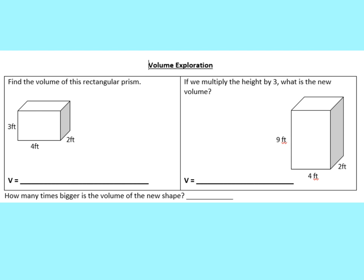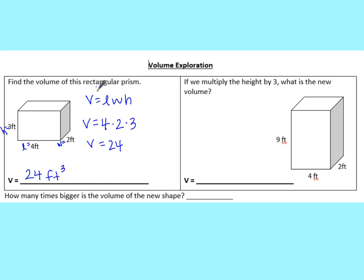The first thing it asks you to do is find the volume of this first rectangular prism. Remember that the volume formula is V = length × width × height. Our length is 4, our width is 2, and the height is 3. Go ahead and try to fill in that volume formula. You should get a volume of 24 feet cubed for this first rectangular prism.